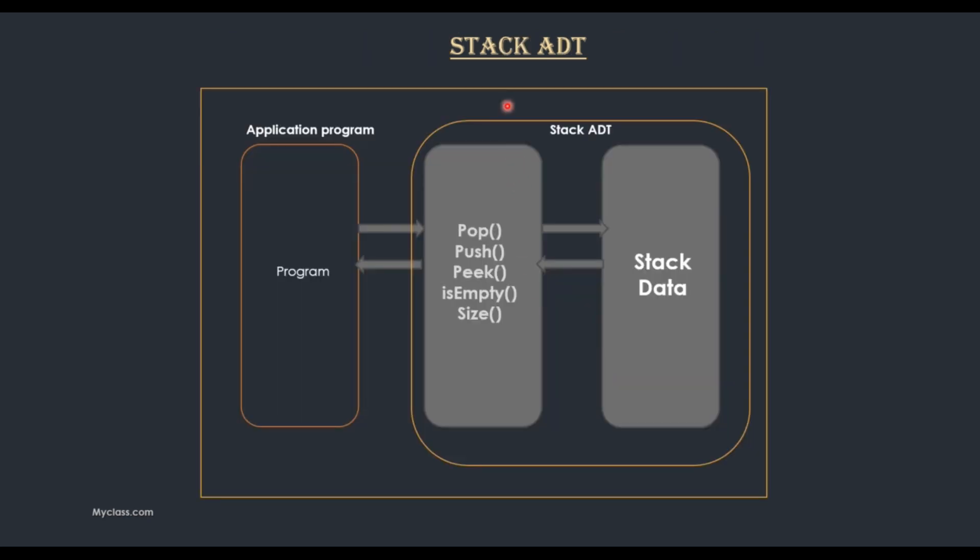This is the example of an ADT, stack ADT. We all know stack is a data structure that is last in first out. This stack ADT contains the operations like push, pop, peek, is empty, size. These all are operations that are performed on stack data structure and this data structure with the data, hold together we can call it as an abstract data type.